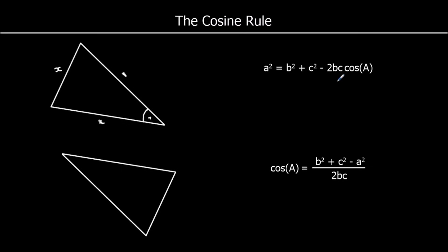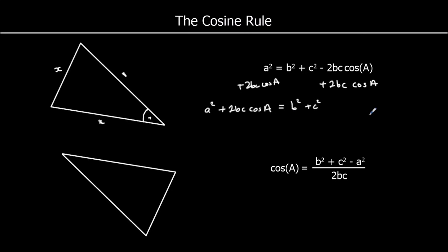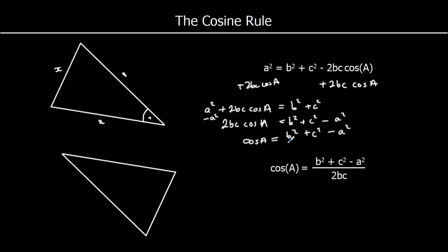We can rearrange this formula to find an angle. If I add 2bc cos A to both sides, that gives me a squared plus 2bc cos A equals b squared plus c squared. Then I subtract a squared from both sides, which leaves 2bc cos A equals b squared plus c squared minus a squared. Dividing both sides by 2bc gives cos A equals b squared plus c squared minus a squared over 2bc.